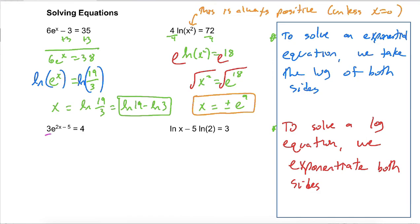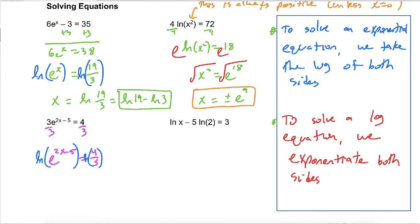For this one, we will divide by 3 on both sides to get e to the 2x minus 5 equals 4 thirds. And then take the natural log of both sides. So that would leave us with 2x minus 5 equals the ln of 4 thirds. And for this one, you can certainly write that as ln of 4 minus ln of 3.